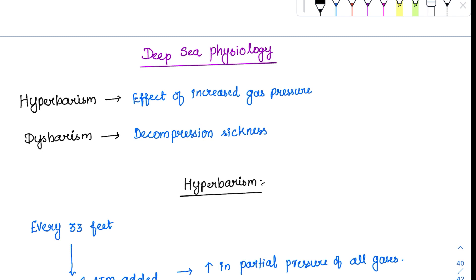Whenever the barometric pressure increases, according to Boyle's law, pressure is inversely proportional to volume. So all the gases will go into a compressed state — the volume is reduced.